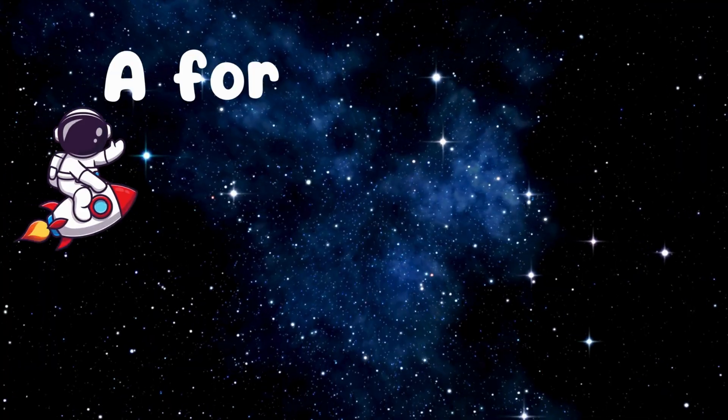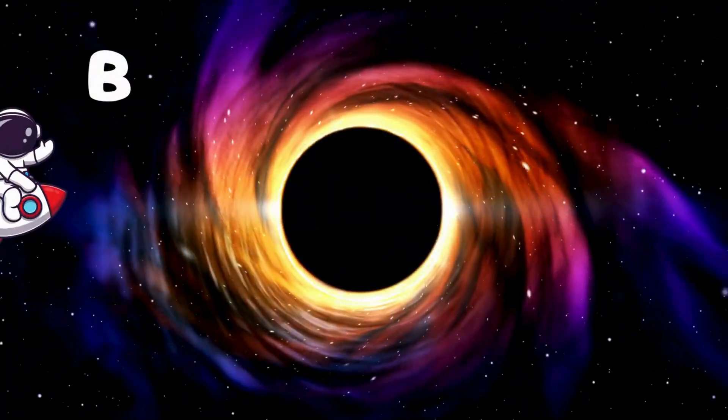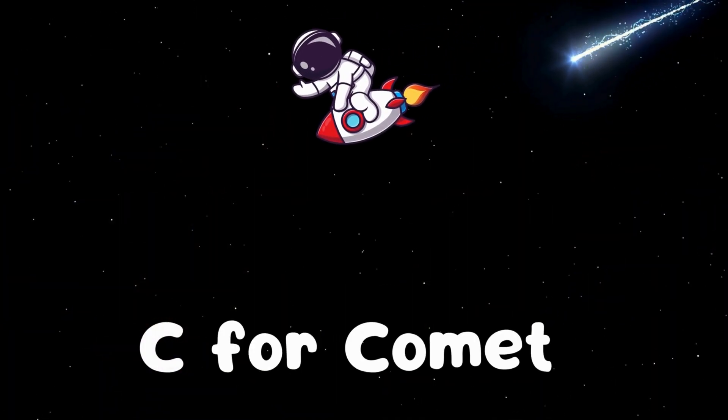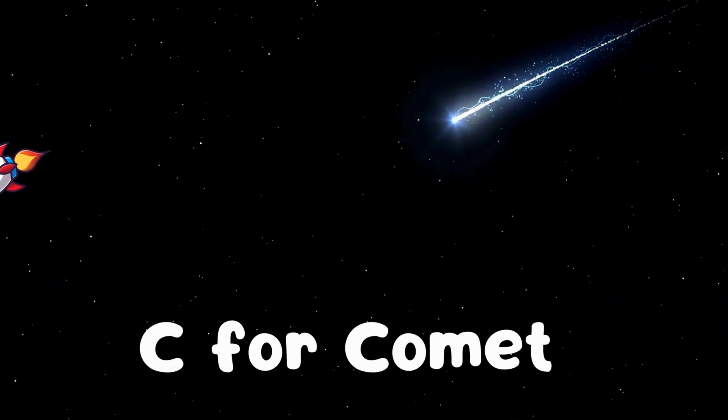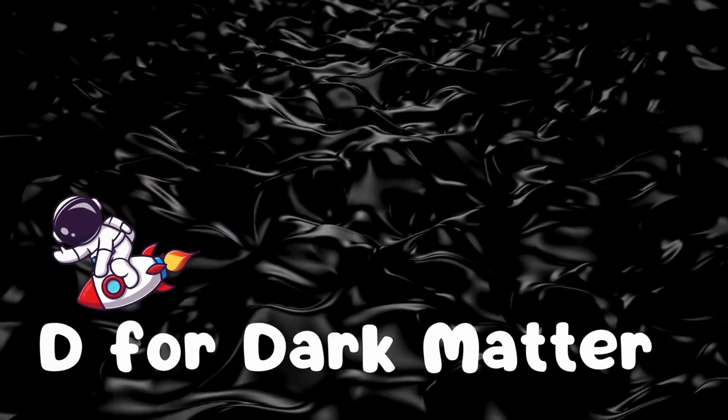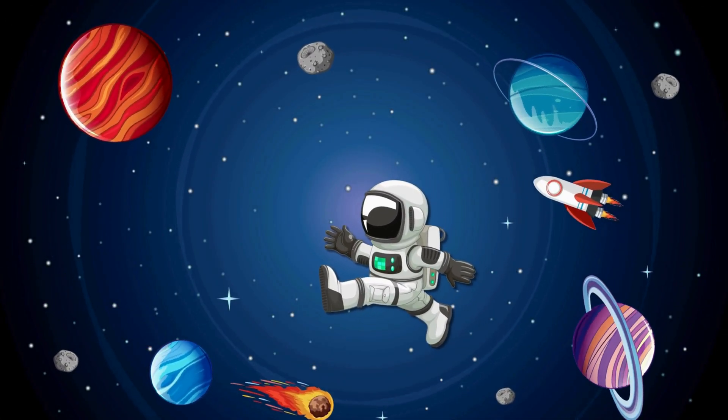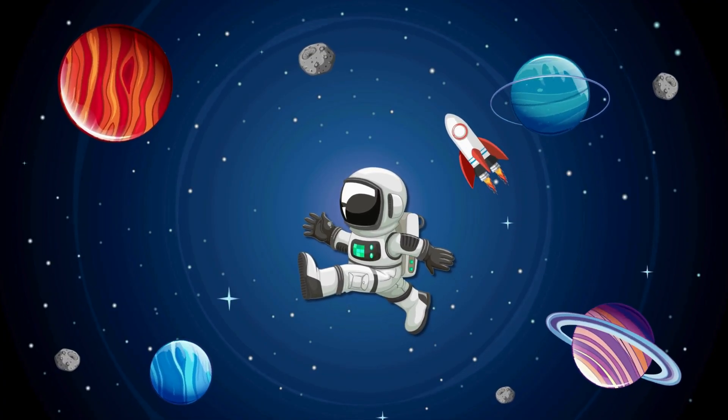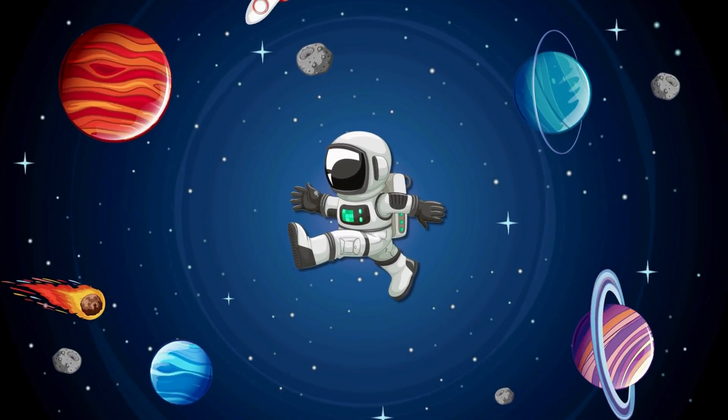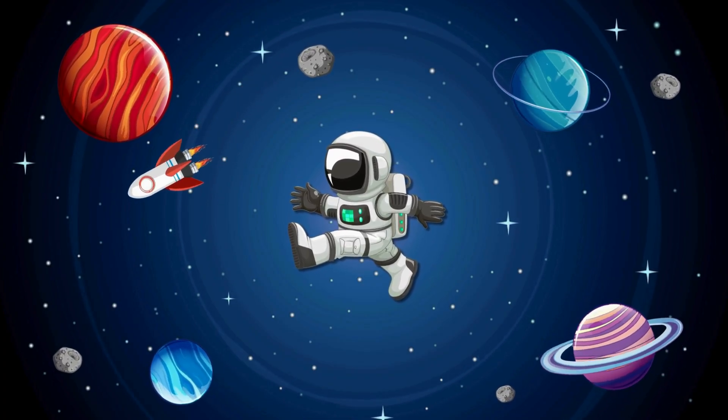A for astronaut, flying high. B for black holes, way in the sky. C for comets, zooming fast. D for dark matter, shadows cast. Come on kids, let's sing and play, learning the stars in a fun new way. From A to Z we're gonna see the wonders of space, so wild and free.